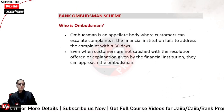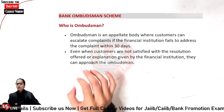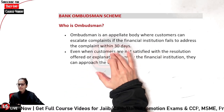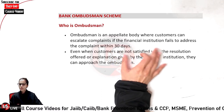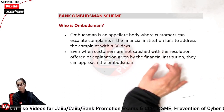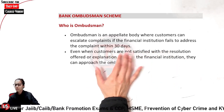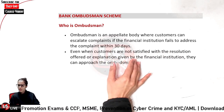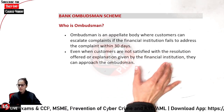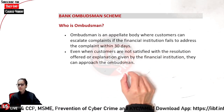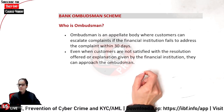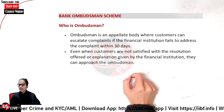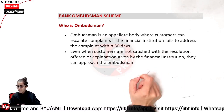So who is the Ombudsman? The Ombudsman is an appellate body where a customer can escalate complaints if the financial institution fails to address the complaint within 30 days. Even when customers are not satisfied with the resolution offered or explanation given by the financial institution, they can approach the Ombudsman.